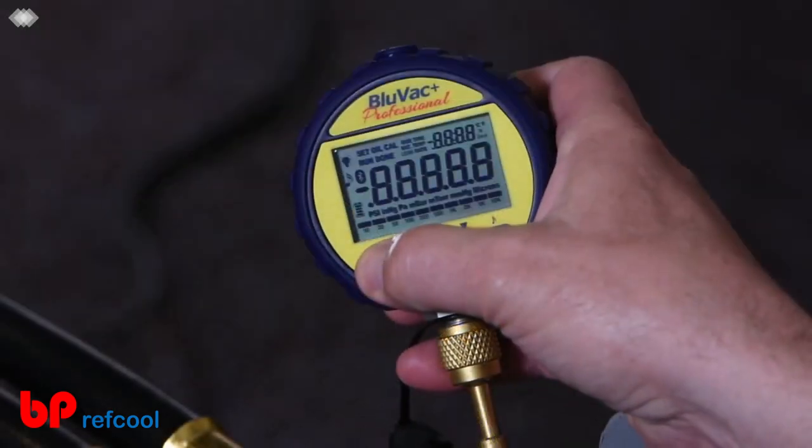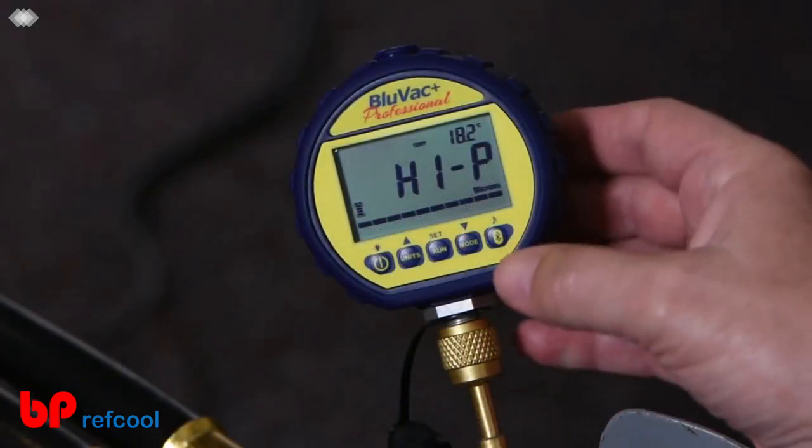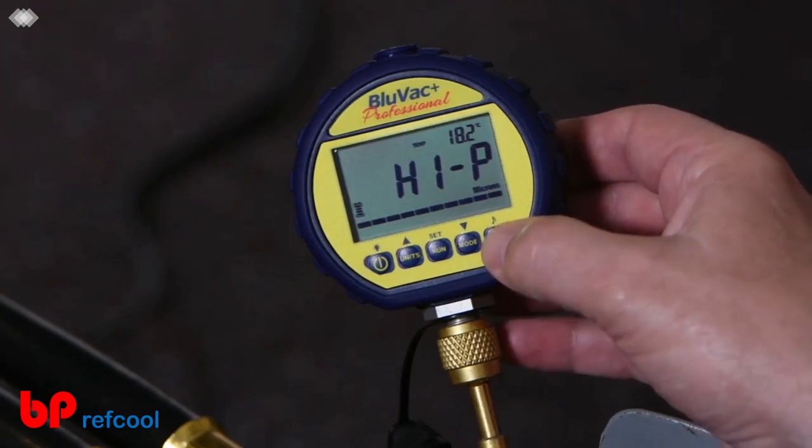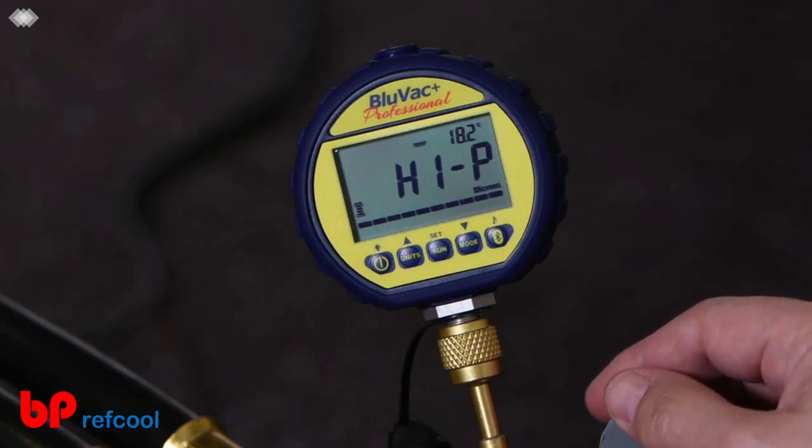So I'm going to go ahead and turn on the gauge here. You've got to let the LCD come all the way up. The first thing we got to do here is turn on the Bluetooth and you'll see the Bluetooth icon flashing there. Now the gauge is in pairing mode.